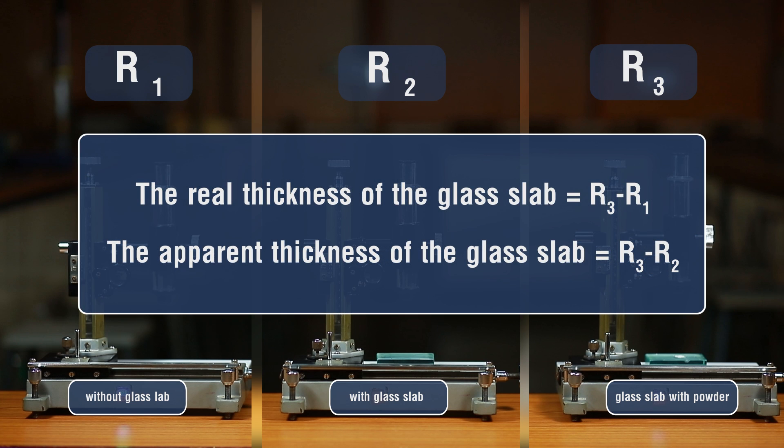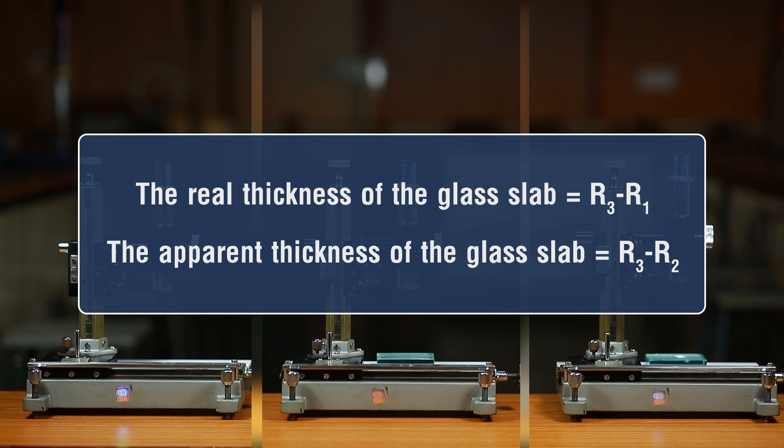Calculate the real thickness of glass slab as R3 minus R1. The apparent thickness of glass slab is R3 minus R2.